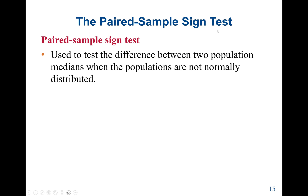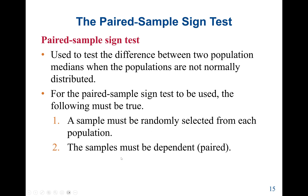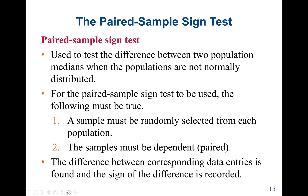Next, the paired sample sign test. The paired sample sign test is used to test the difference between two population medians when the populations are not normally distributed. If populations are normally distributed, we can use the t-test — either the independent sample t-test or the paired sample t-test. For the paired sample sign test, a sample must be randomly selected from each population, the samples must be dependent (paired), and the difference between corresponding data entries is found and the sign of the difference is recorded.